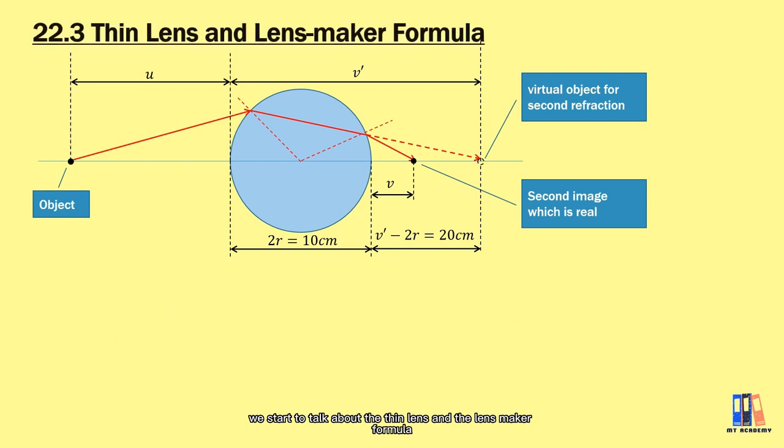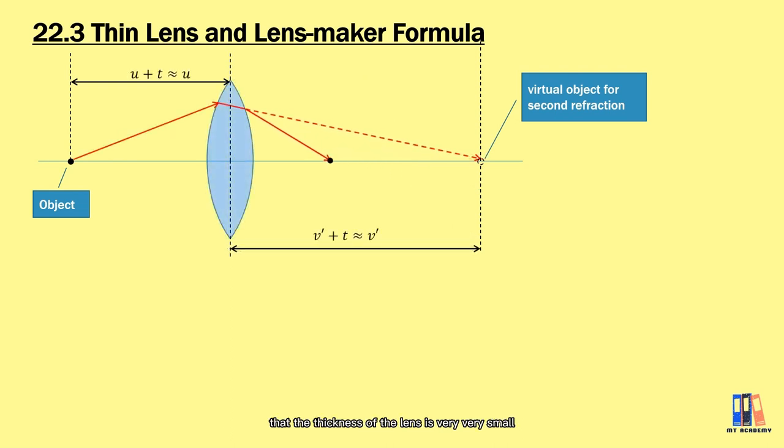Now, we will start to talk about the thin lens and the lens maker formula. When we say thin lens, it is very thin that the thickness of the lens is very small compared to the object and image distance. With reference to the previous illustration that I have discussed, the object distance can be approximated to the distance between the object and the axis of the lens. And the same thing happens also for the image distance.